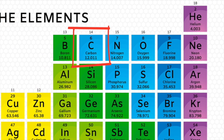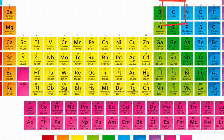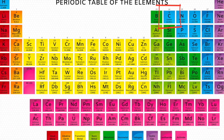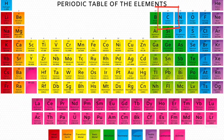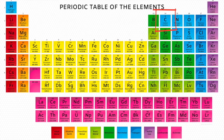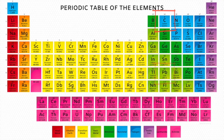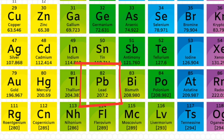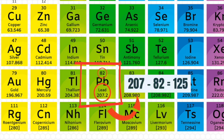For example, carbon-12 is stable and has 6 protons and 6 neutrons. However, as the number of protons increases, more neutrons are needed to keep the nucleus stable. For example, lead-207 has 82 protons and 125 neutrons.